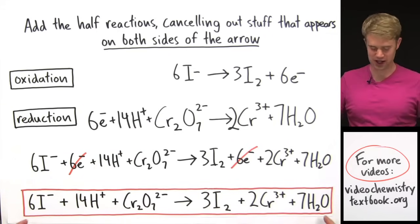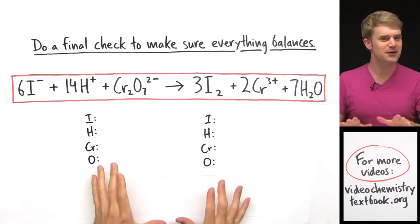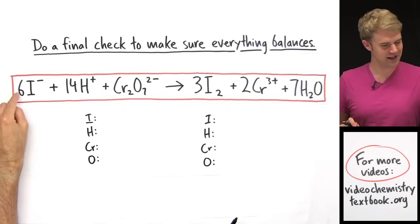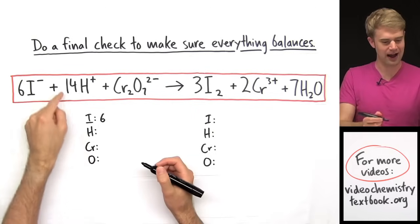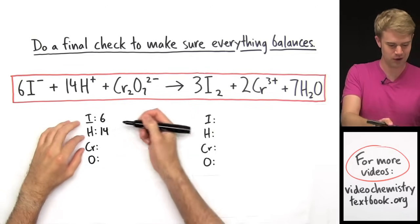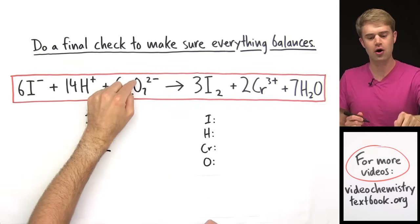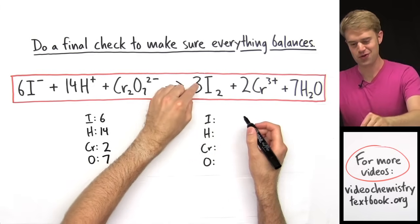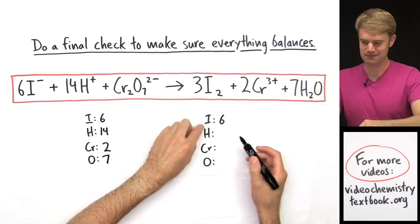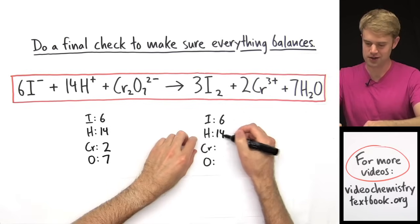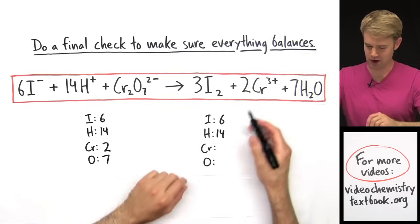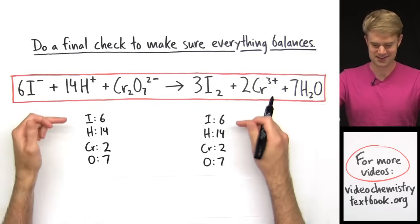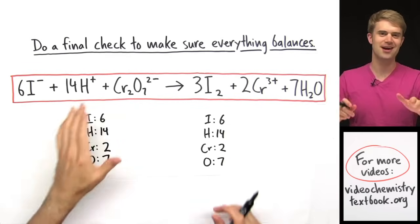The last thing I'm going to do is check it for balance to make sure we did everything right. On this side of the equation: 6 iodines, 14 hydrogens, 2 chromiums, and 7 oxygens. Over on this side: iodines — 3 times 2 is 6; hydrogens — 7 times 2 is 14; chromium — 2 Cr's; and oxygen — 7 times 1 is 7. So we've got 6, 14, 2, 7 — perfect, my atoms balance.